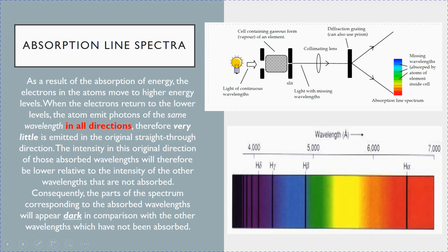Therefore, in the original direction straight through where the screen is, the intensity in this original direction will be very very low relative to other photons that are not absorbed. So consequently, what you see are the colored background due to photons not absorbed, and the dark lines correspond to the low intensity light in that certain direction.